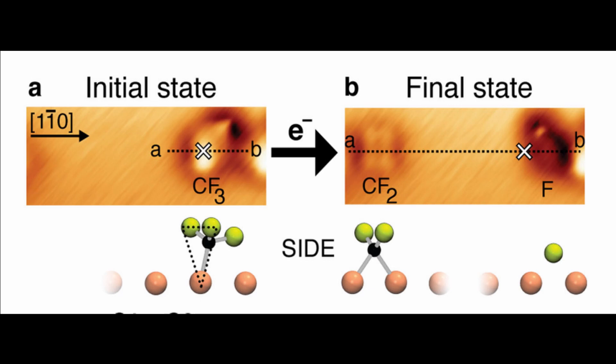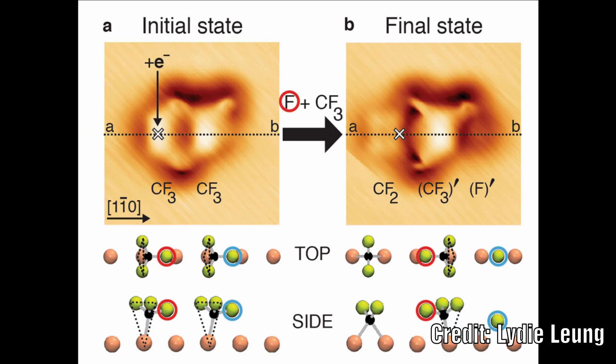In order to fire the fluorine atom at the target, they used a process of electron induced dissociation of one of the fluoromethyl chains. This caused the fluorine atom to recoil along the copper row and collide with the second fluoromethyl chain.